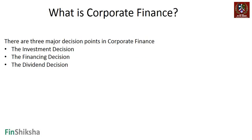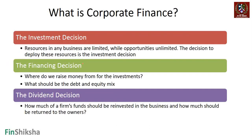Broadly, under corporate finance there are three major decision points that all firm decisions fall under. The first is the investment decision, the second is the financing decision, and the third is the dividend decision. These three decision points form the bulk of what we're going to study around corporate finance.